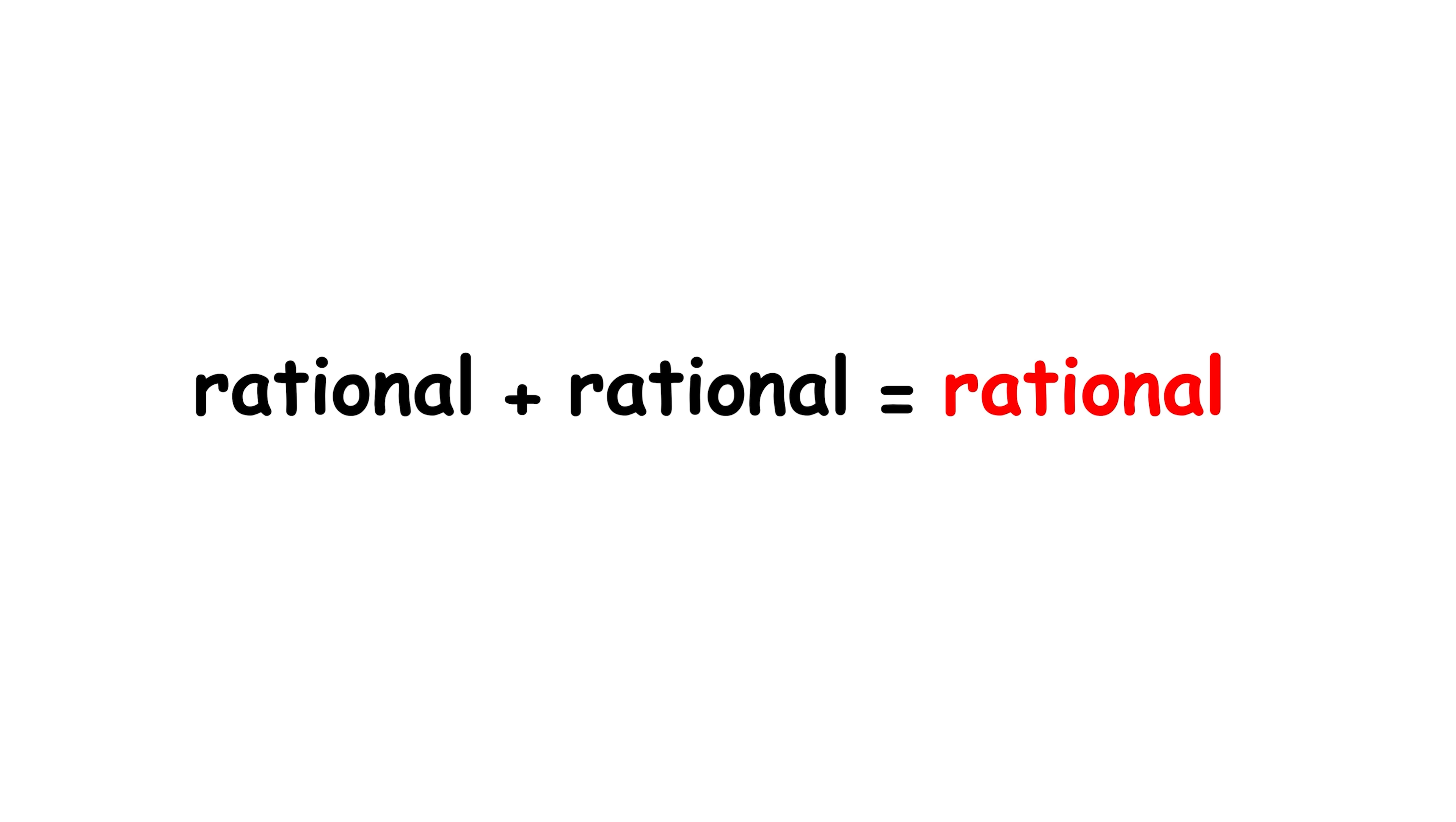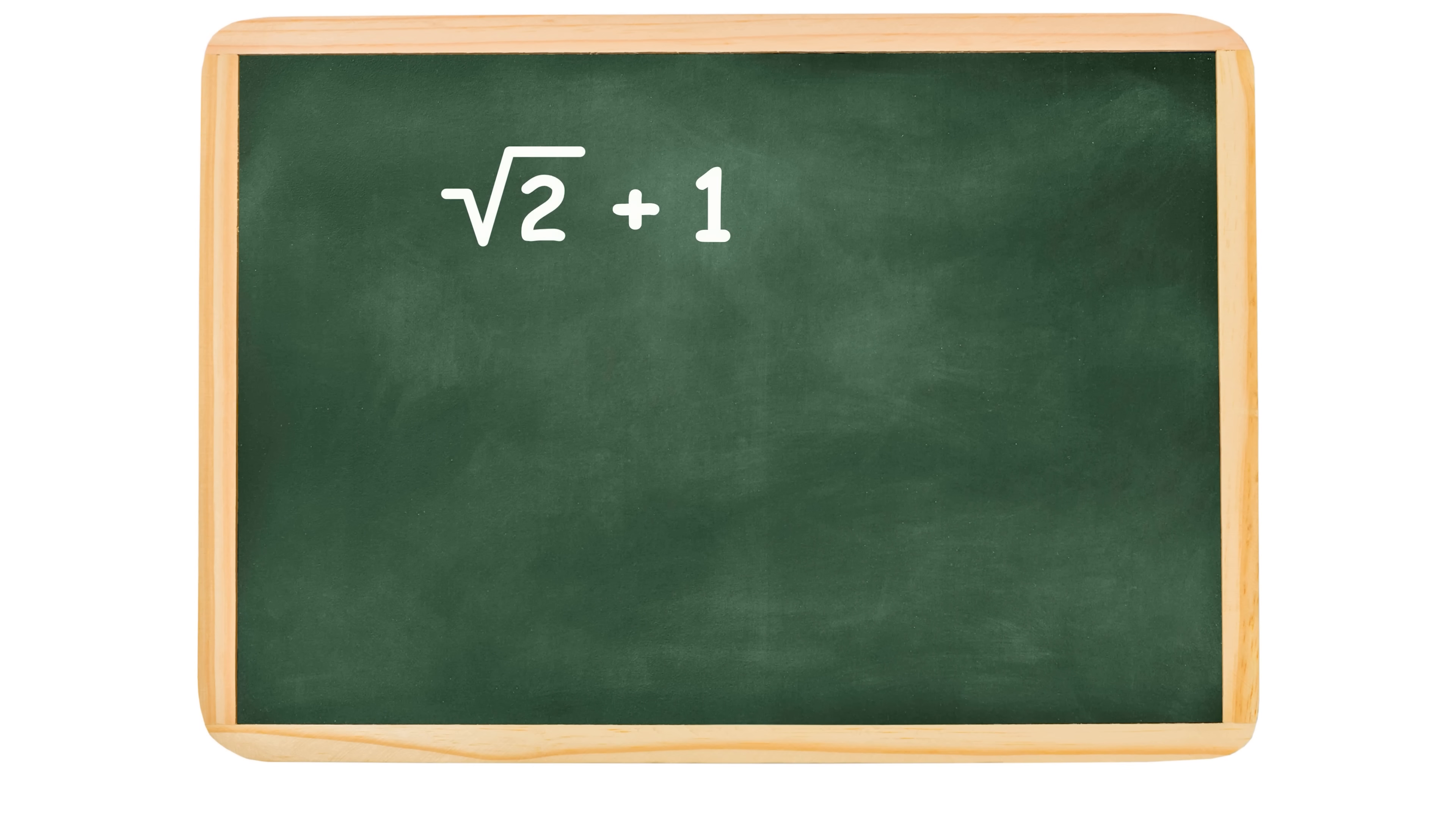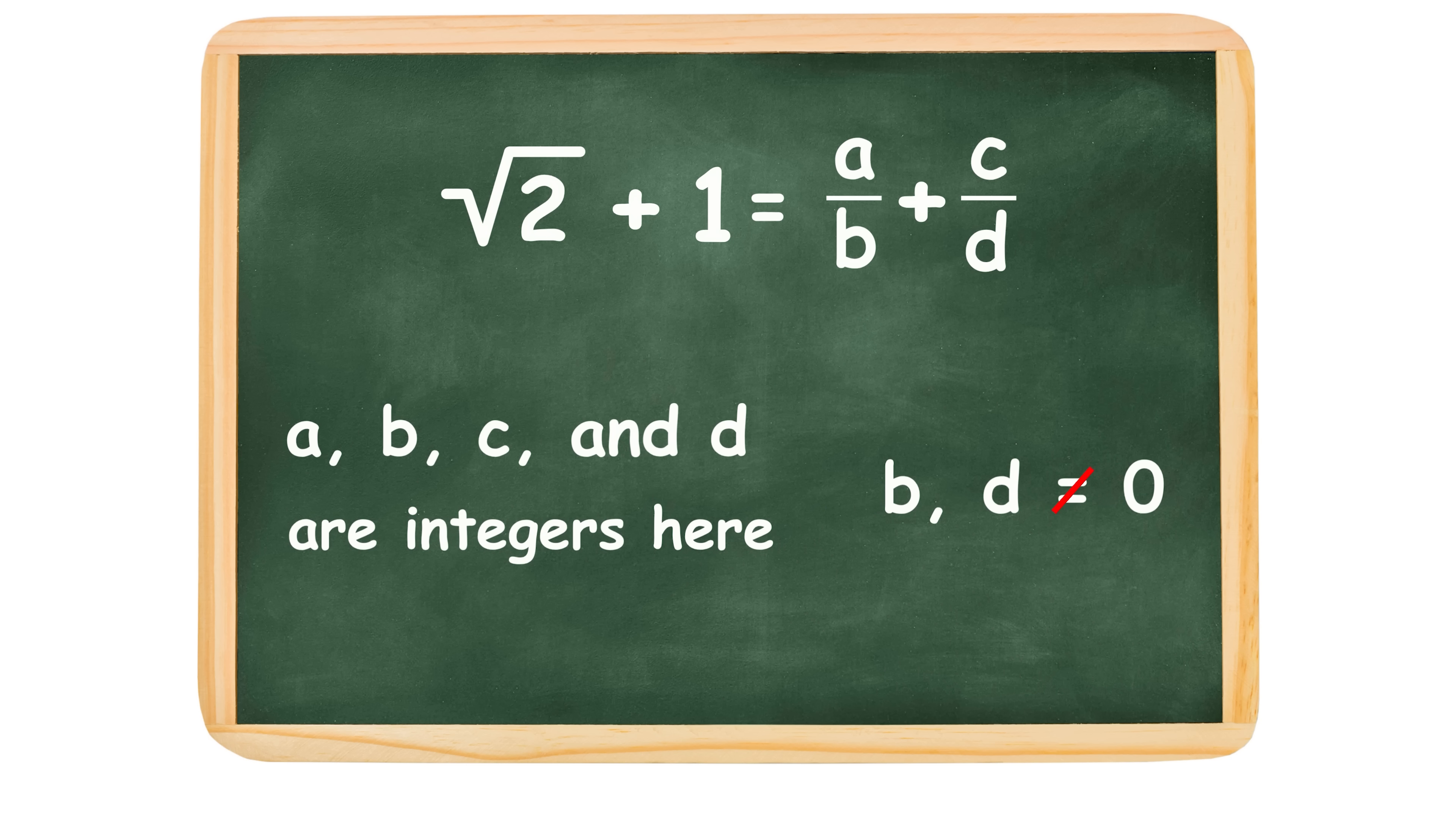Firstly, we can prove that a rational number plus a rational number is always a rational number. Let's represent the sum of two rational numbers as a over b plus c over d, where a, b, c, and d are all integers, and b and d aren't equal to 0.